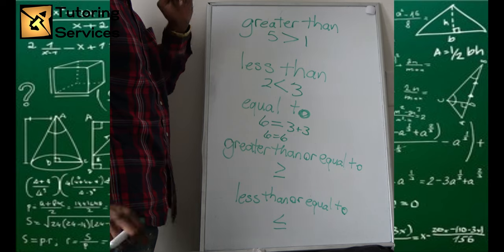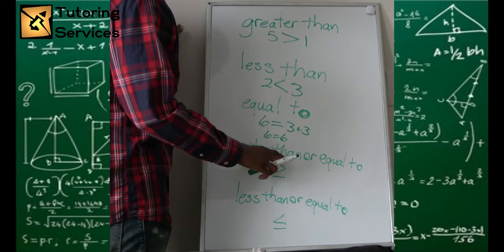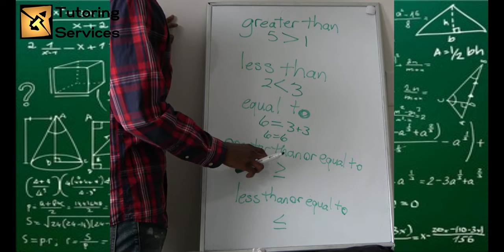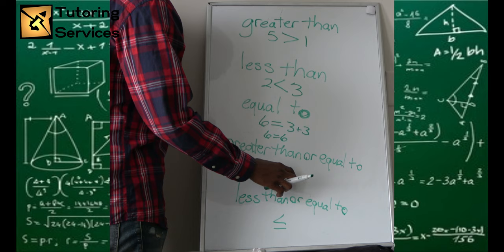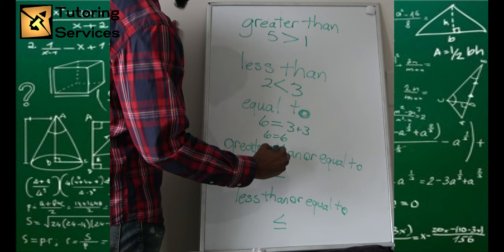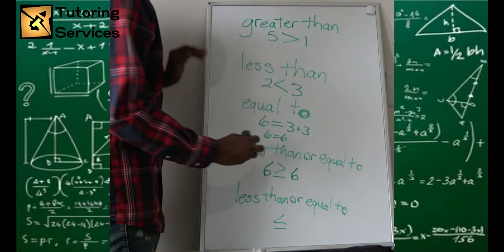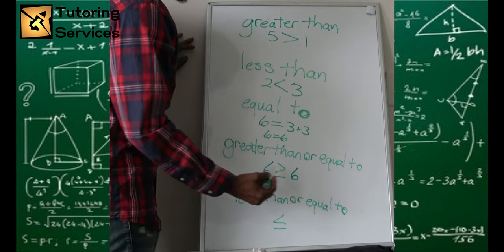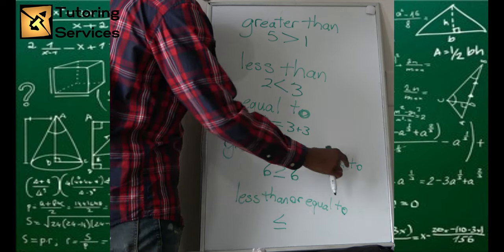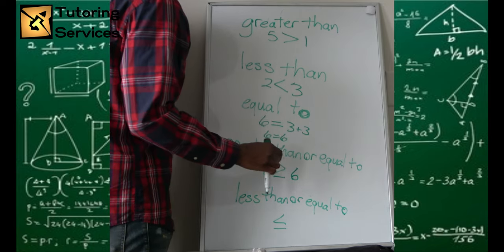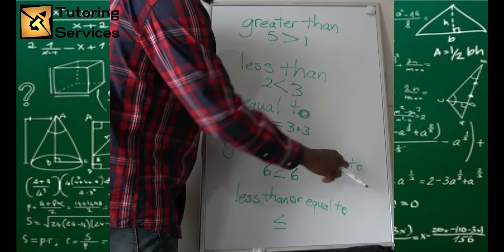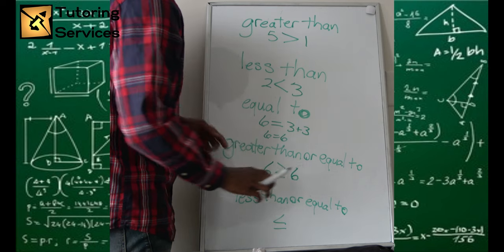Greater than or equal to — what does that mean? We're thinking of both: you can have a number that satisfies this equality and proves it to be true. If I were to say six is greater than or equal to six, this is still a true statement — because while six is not greater than six, it is equal to six. It can be either or: either it's greater than or it's equal to six. Since it's equal to six, you can say six is greater than or equal to six.